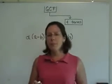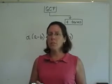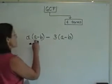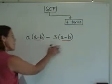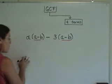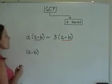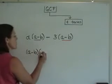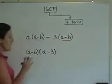Another problem like the previous one: think of this as two expressions, each of them having a common binomial. In this case, a minus b is common to each of these terms. I'm going to factor those out and write them down one time, as when I take the greatest common factor out. In the next set of parentheses, I'm going to need this factor that was left alone and this minus 3 in the other set. And I've finished factoring.